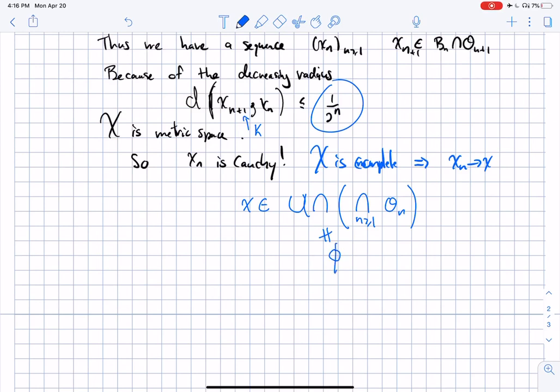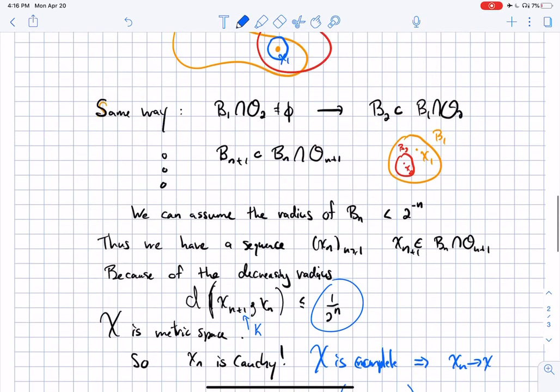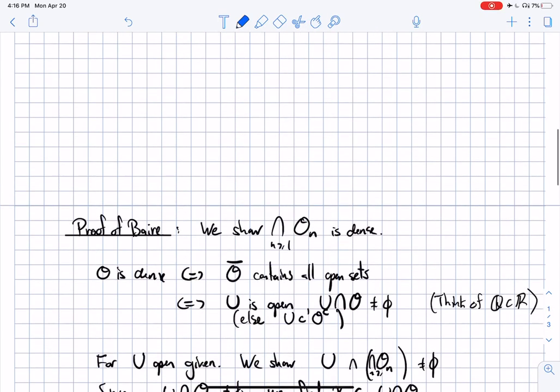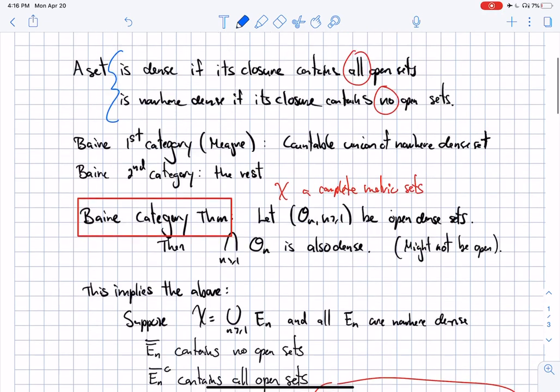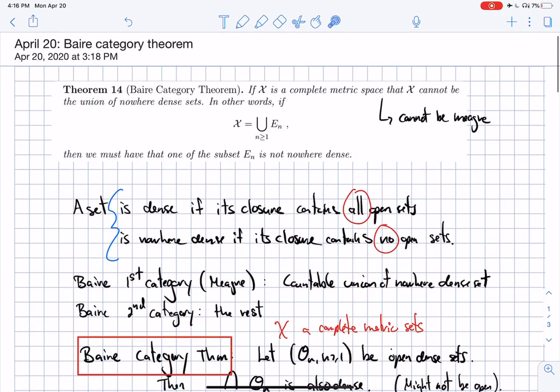That's the proof of Baire. So that's actually not too bad. What we're going to see on Wednesday is the application of this to functional analysis, which gives you a lot of structure on bounded linear operators and bounded linear functions in particular. Thank you for listening.